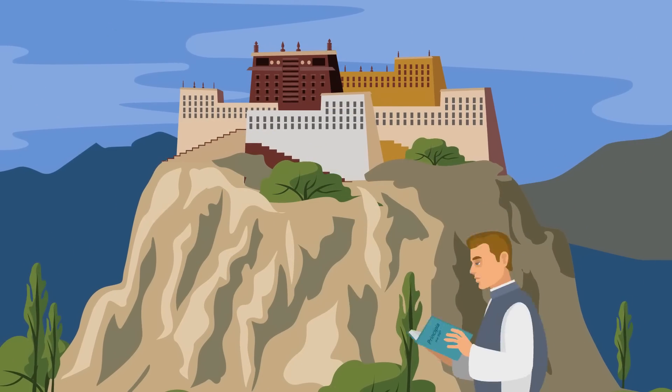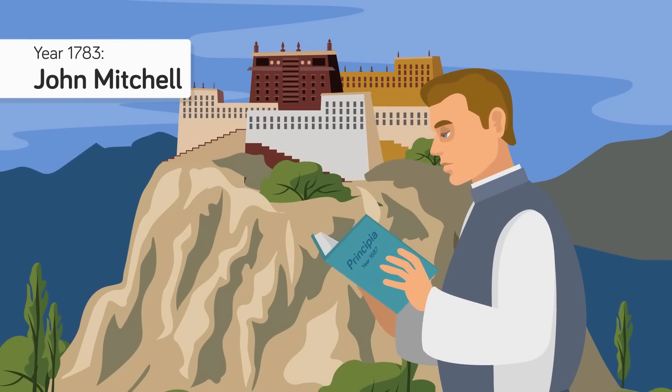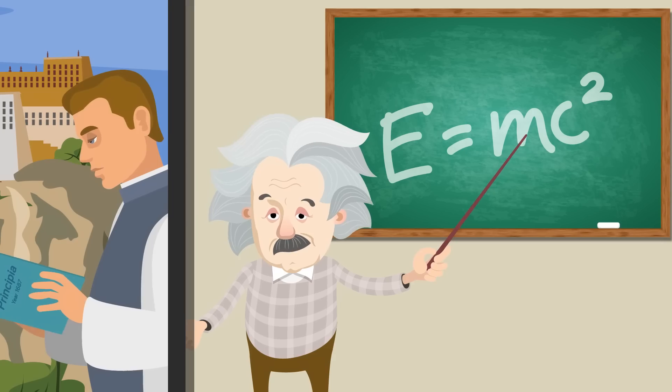Then a hundred years later, a British monk by the name of John Mitchell used Newton's own math to deduce that there might in fact be an object so massive that matter would need an escape velocity greater than the speed of light in order to escape its gravitational attraction—a physical impossibility.